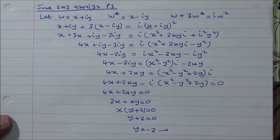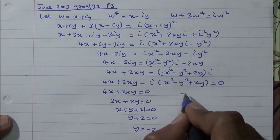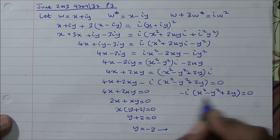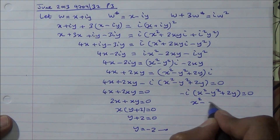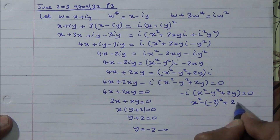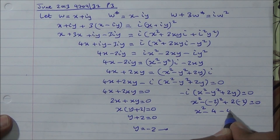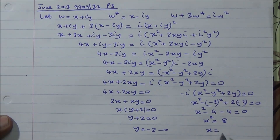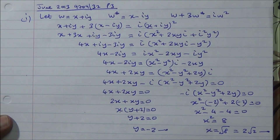From the imaginary part equation: x squared minus y squared plus 2y equals 0. Substituting y equals minus 2: x squared minus 4 minus 4 equals 0, so x squared equals 8, giving x equals root of 8, which is 2 root 2. That completes the first part of the question.